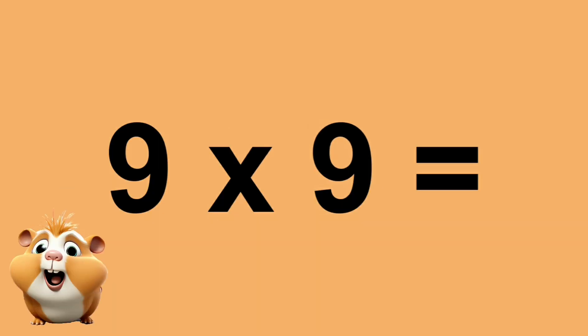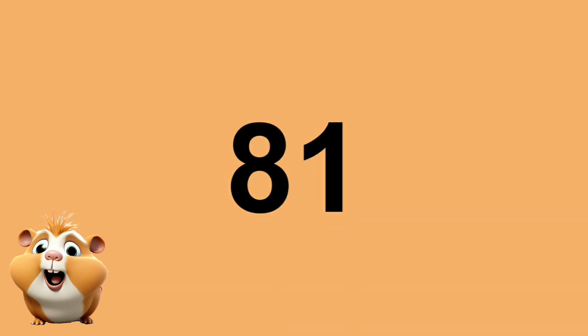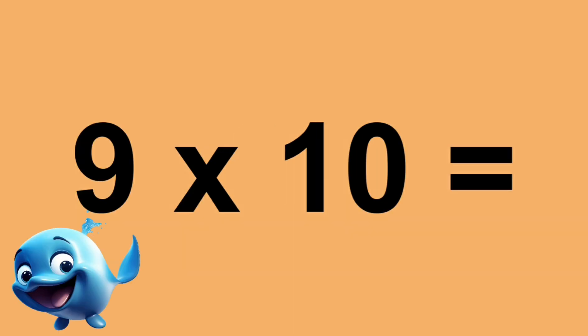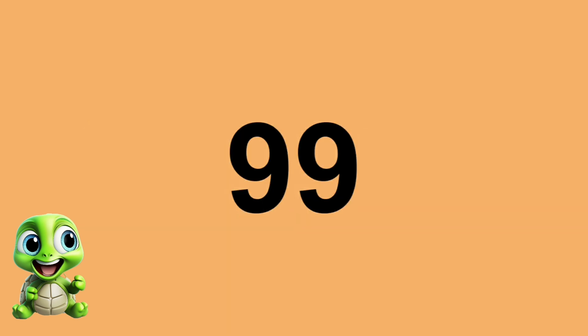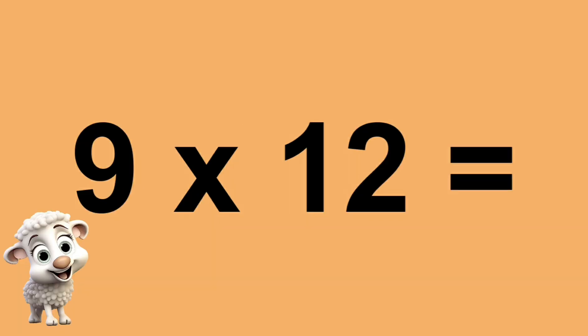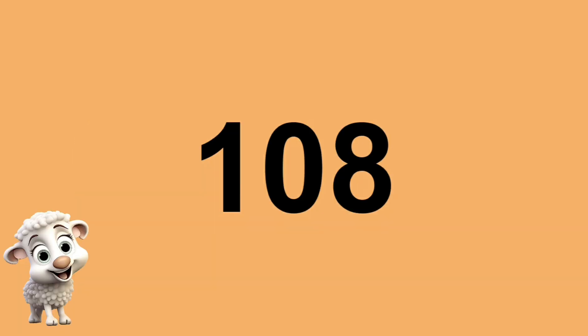Nine times nine equals eighty-one. Nine times ten equals ninety. Nine times eleven equals ninety-nine. Nine times twelve equals one hundred and eight.